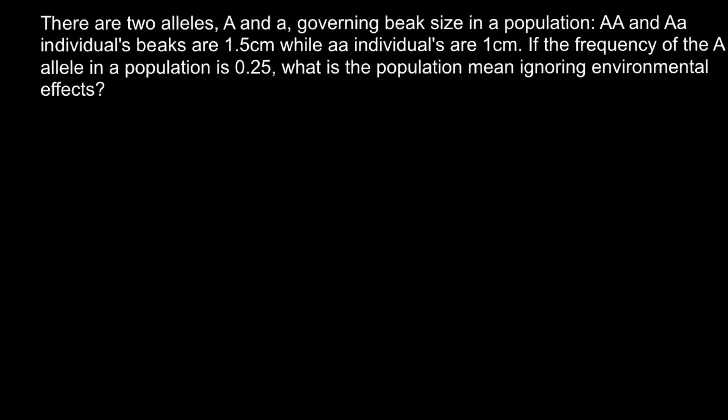Today's problem is going to be about population genetics. There are two alleles, capital A and small a, governing beak size. In the population, homozygous dominant and heterozygous individuals' beaks are 1.5 cm, while homozygous recessive individuals are 1 cm. If the frequency of the dominant allele in the population is 0.25, what does the population mean ignoring environmental effects?